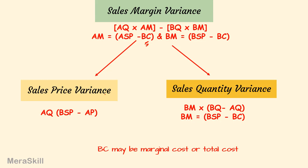One small difference to notice: I have put budgeted quantity before and actual quantity later. This is because it is a sales variance. If your actual quantity is more, or your actual price is more, then you get a favorable variance — because the profits go up. If they come down, it is an unfavorable variance.